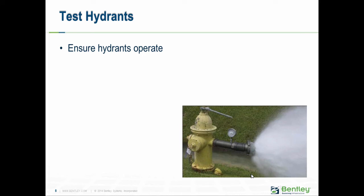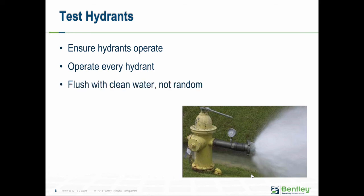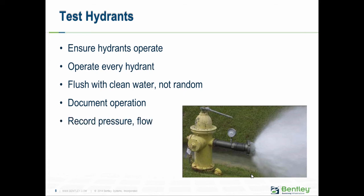Some people do flushing not primarily for water quality — that's a side benefit — but really to make sure hydrants will operate when the fire department needs them. This is a different kind of goal. You need to operate every hydrant; there are no long flushing runs. You want to flush with clean water behind you to improve water quality as a side benefit. Document operations: what's the pressure, what kind of flow can you get? With this information in an asset management system, you can look for trends — for example, if flow from a hydrant decreases suddenly, that might indicate a valve has been left closed or partly closed.